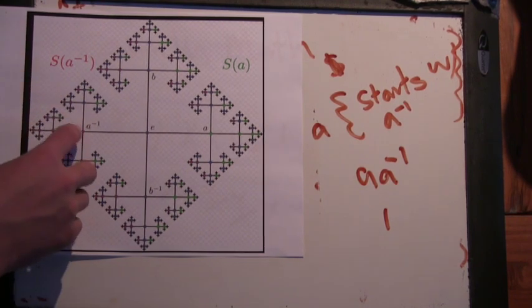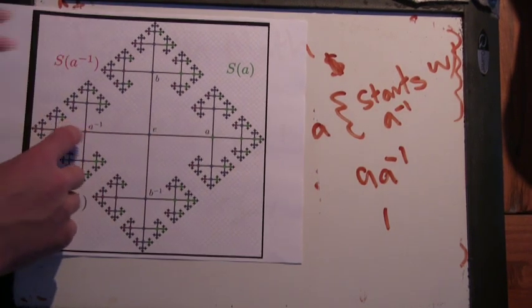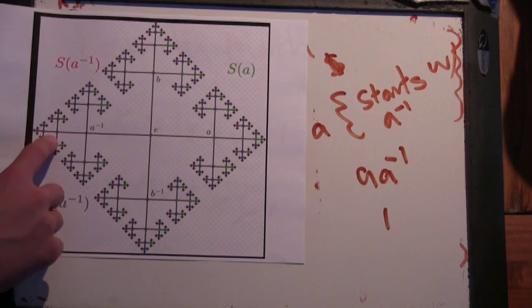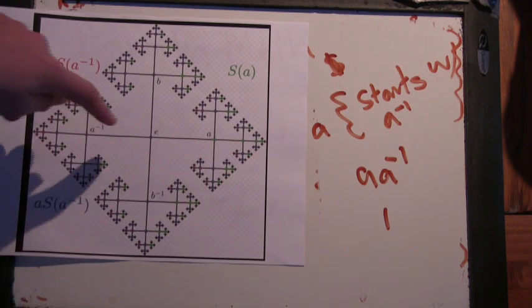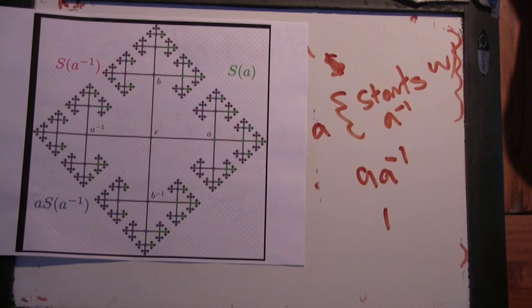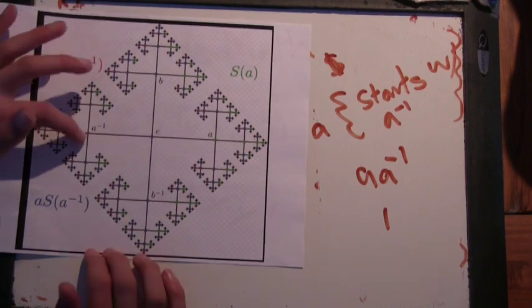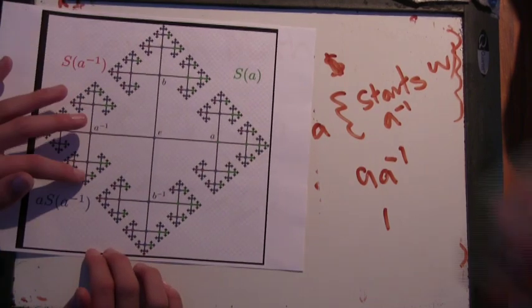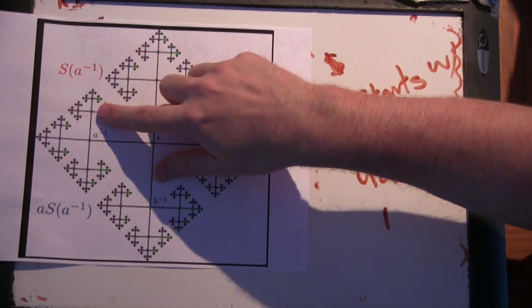And then you can imagine just going along this line here. From A inverse, you go to A inverse squared, A inverse cubed, A inverse to the fourth, just down this line. Those are all just going to shift back one. Okay. All right. And then you can imagine going down like this, these lines, these are all going to shift back one as the A inverse goes away. All right.